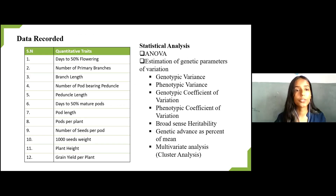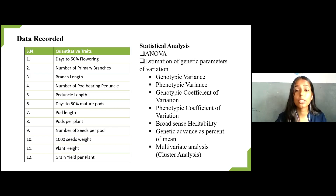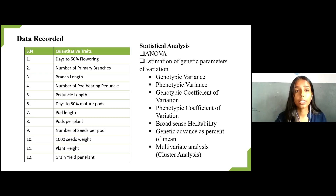Data were recorded for 12 quantitative traits for estimation of genetic parameters of variation: genotypic variance, phenotypic variance, phenotypic coefficient of variation, genotypic coefficient of variation, broad sense heritability, genetic advance as percent of mean, and cluster analysis were estimated from the data recorded. All data were recorded from 10 randomly selected plants, leaving border rows on each side.